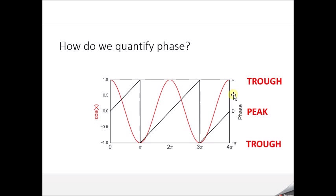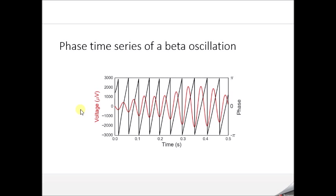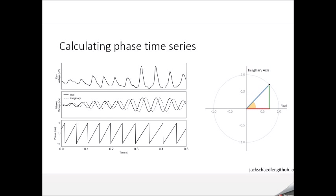Phase values between 0 and π correspond to the decaying edge of an oscillation, whereas phase values between −π and 0 correspond to the rising phase. In the example shown, the red trace is a filtered beta oscillation and the black trace is the instantaneous phase over time — at each peak we are at phase 0, and at each trough we're at phase π or −π.